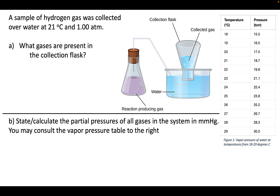We do need to account for the fact that the gas we're collecting is not just going to have the hydrogen gas we collect, but is also going to have water vapor. This is because the water in the liquid phase wants to leave the liquid phase to a certain extent, and in a closed system like this, it's going to set up a partial pressure within that mixture inside our collection flask — the hydrogen gas we want to collect and the water vapor that's naturally a contaminant within this apparatus, which we need to adjust for.